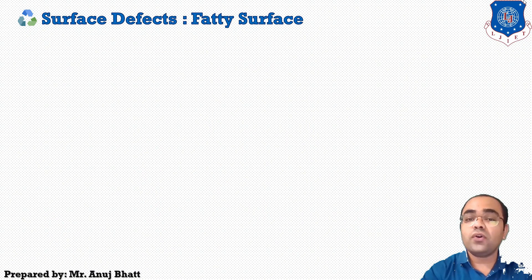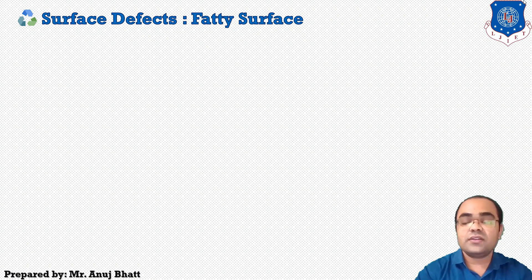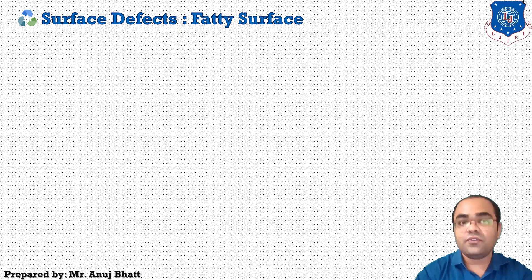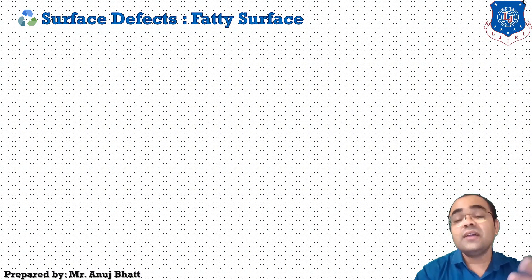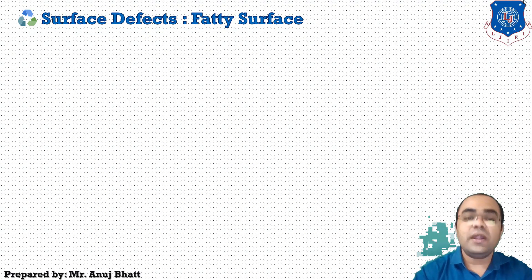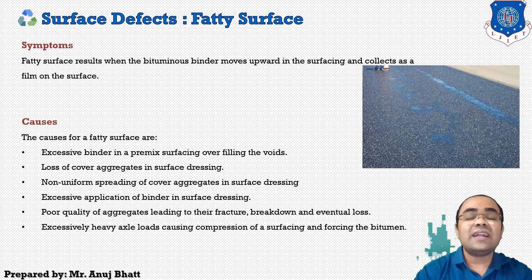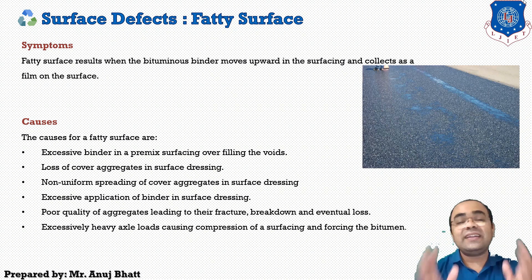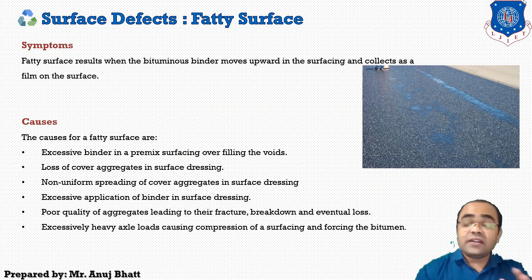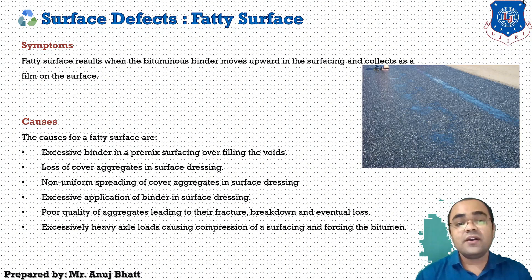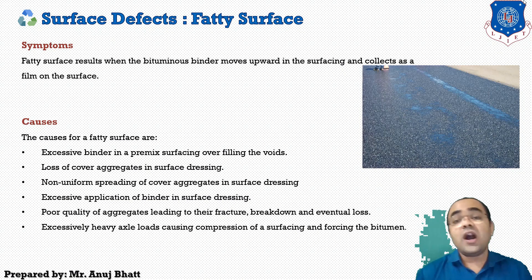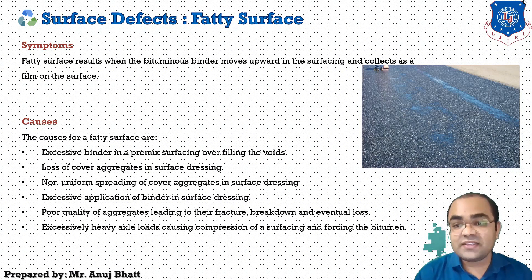The first category of surface defects is the fatty surface. To identify the fatty surface, we discuss the symptoms, then the causes, and then the treatment. Starting with the symptoms: the fatty surface results when the bituminous binder moves upward in the surfacing and collects as a film on the surface.